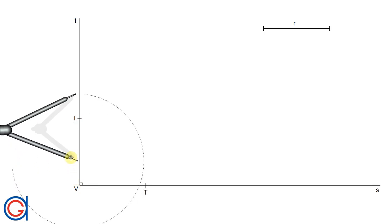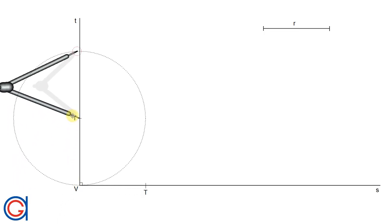So now with the compass set to the same radius and setting our compass on tangent point 1, we are going to scribe an arc as can be seen here.